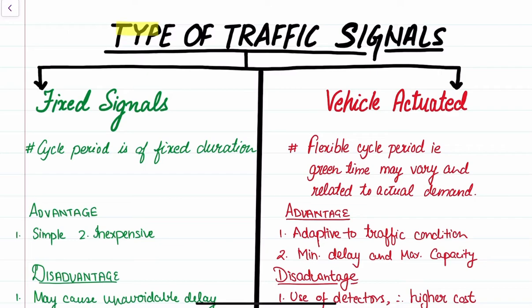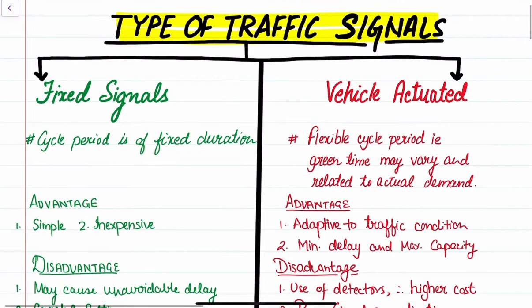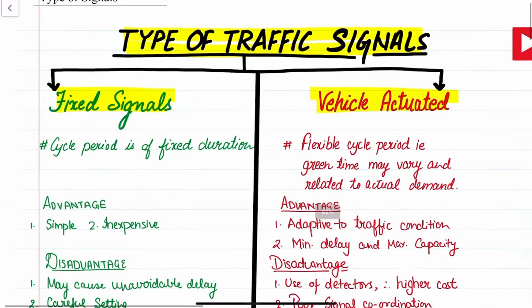Talking about the variety of traffic signals that are available, it can be divided into three categories. The first is the fixed signal type, second is the vehicle-actuated type, and the third one is the semi-vehicle-actuated type.